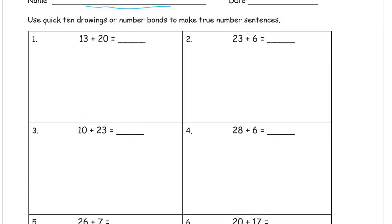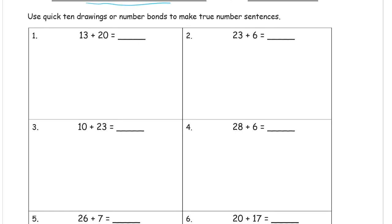We can use either Quick 10 Drawings or Number Bonds to make True Number Sentences. And we still have to draw them. Maybe you can do these in your head or maybe you can't, but we still have to do the Quick 10 Drawings or write down the Number Bonds to show the True Number Sentences.